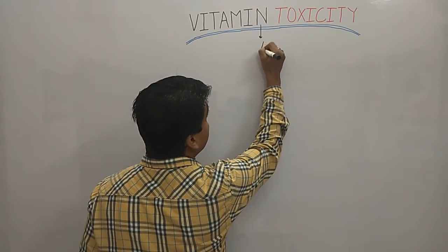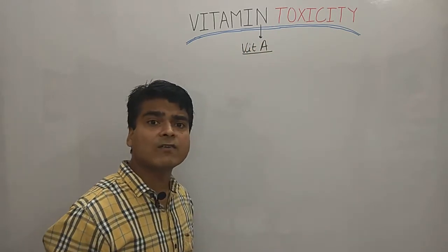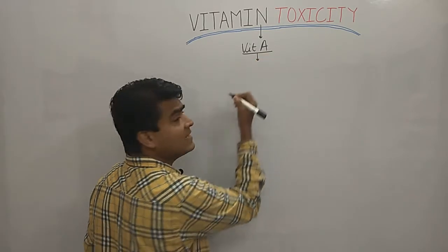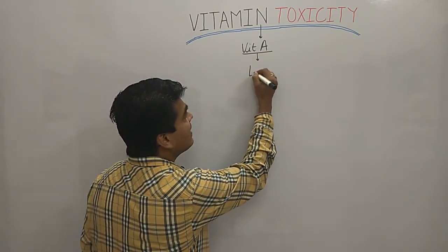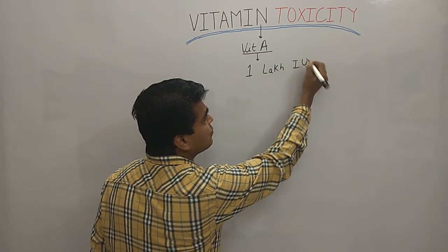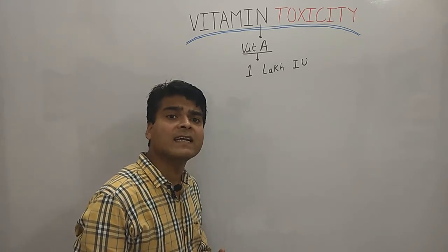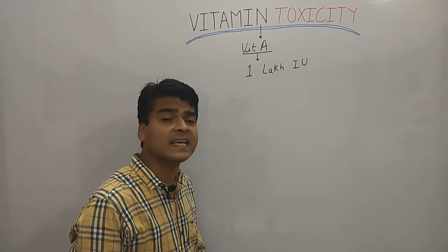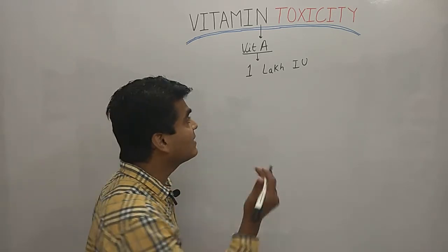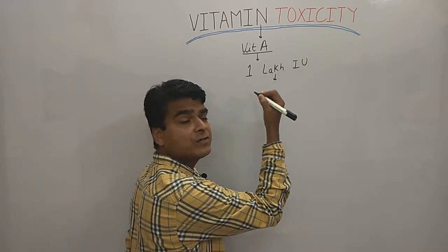Vitamin A toxicity occurs when a person takes 1 lakh (100,000) international units per day or more. In such cases, there are chances of Vitamin A toxicity, and this condition is known as hypervitaminosis A.